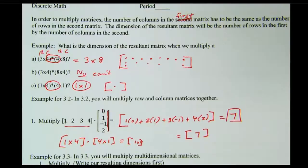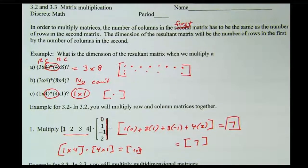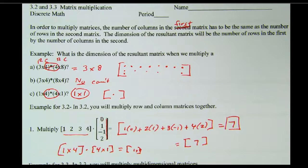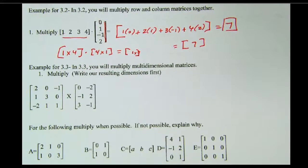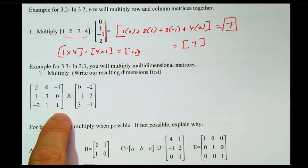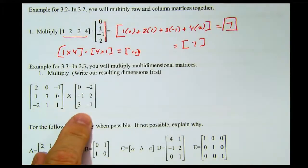Hi, in this video we're doing matrix multiplication. We already did row and column. That would be in the 3.2 video. Now we're going to extend it to something that has more dimensions. And so this would be a 3 by 3 times a 3 by 2.